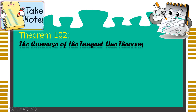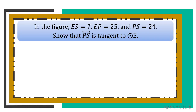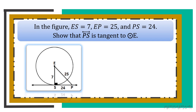Moving on to theorem 102, the converse of the tangent line theorem. It states that in a plane, if a line is perpendicular to a radius of a circle at the endpoint of the circle, then the line is tangent to the circle. Since theorem 102 is the converse of theorem 101, we apply the converse of the Pythagorean theorem. All the given sides of our triangle in the illustration are already provided.